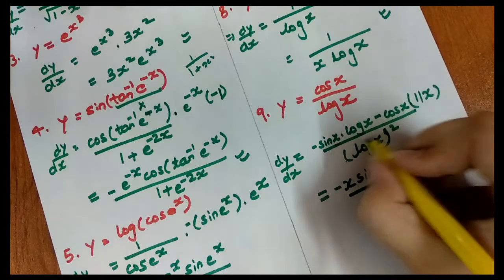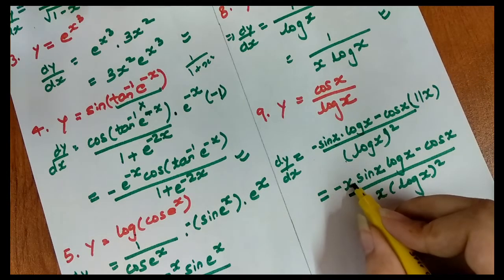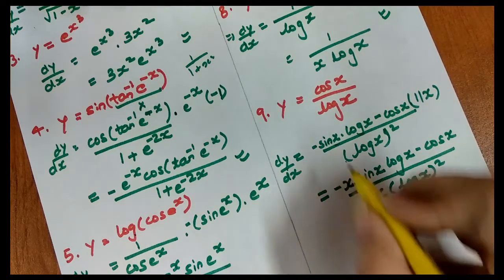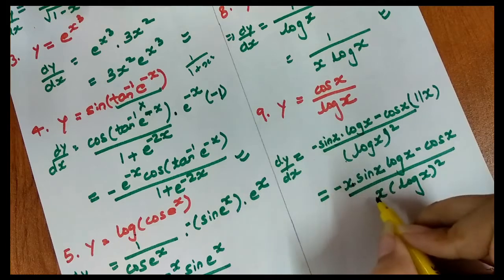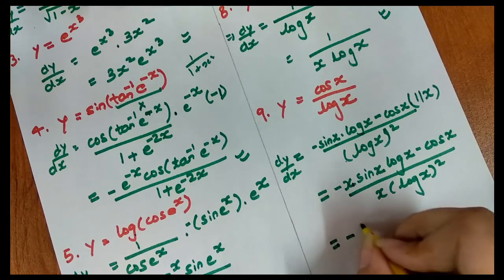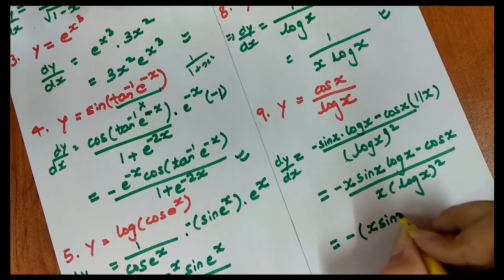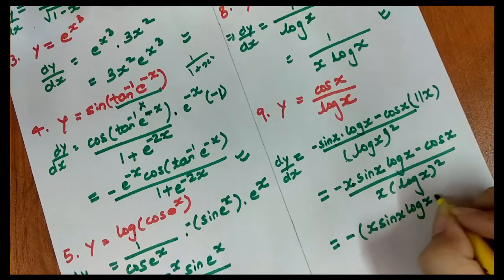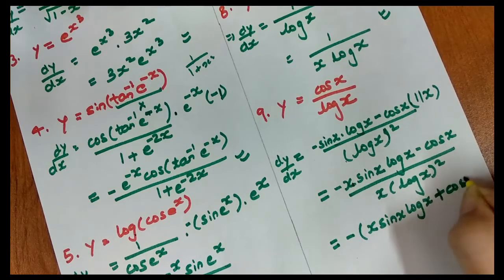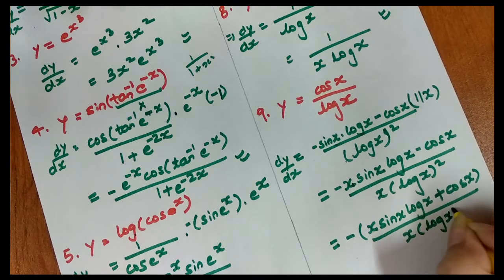Taking −1 common from the numerator, we get minus (x·sin x·log x + cos x) upon x·(log x)². This completes the differentiation for this question.